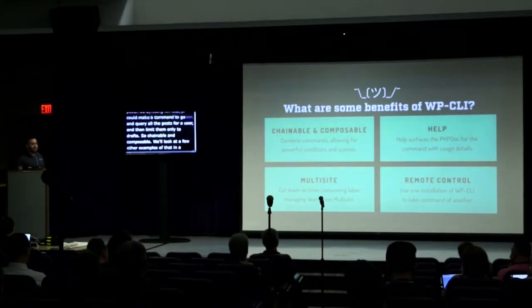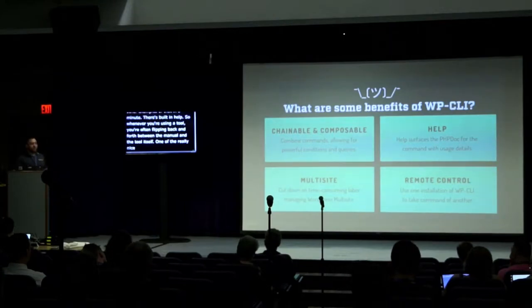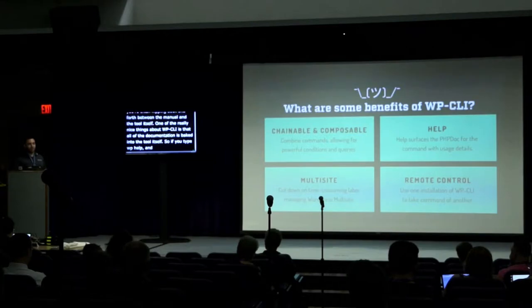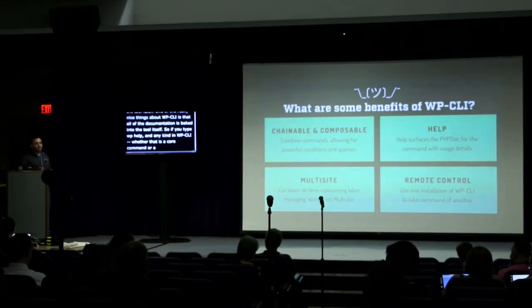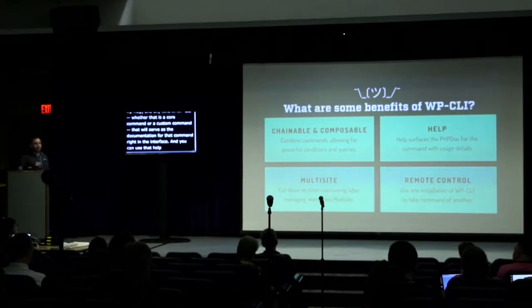There's built-in help. When you're using a tool, you're often flipping back and forth between the manual and the tool itself. One of the really nice things about WP-CLI is that all the documentation is baked into the tool. If you type WP help on any command — whether a core command or a custom command — that serves as the documentation right in the interface. You can use the help positional argument or the --help flag.